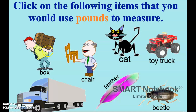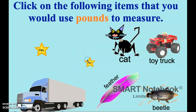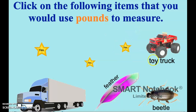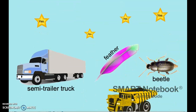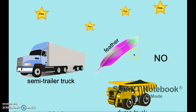The box does look fairly heavy, but I would still say we would use pounds, so yes. The chair — it's just the chair, not the man. Even though it's a small chair, I'm pretty sure we'd still use pounds, so yes. A cat — even if it's small, we're not going to use ounces, and tons is too big, so yes. A toy truck — ounces would not be enough and tons would be too much, so yes. A beetle usually doesn't weigh very much, so no. A feather — we just did that for ounces, so no.